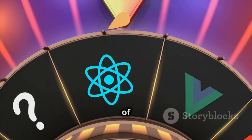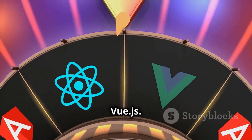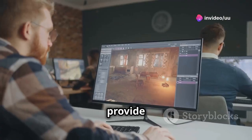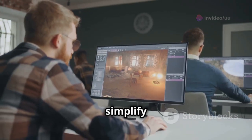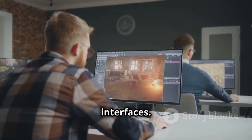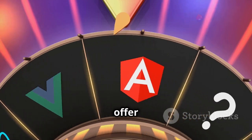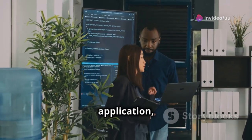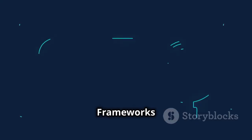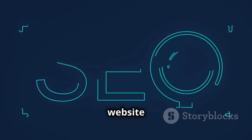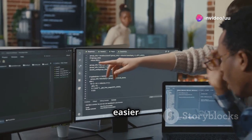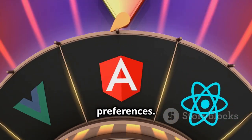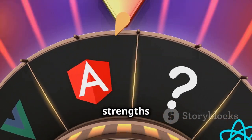Front-end frameworks like React, Angular, and Vue.js have revolutionized modern web development. They provide pre-built components, libraries, and tools that simplify the process of building complex user interfaces. These frameworks offer several key benefits: reusability of components reduces code duplication, optimized rendering engines improve website performance, and an organized code structure makes it easier to maintain and update your application. Choosing the right framework depends on your project requirements — each has its own strengths and weaknesses.